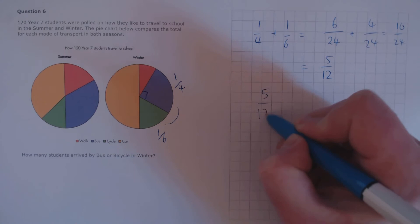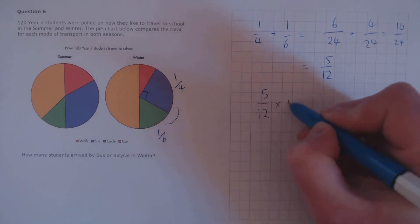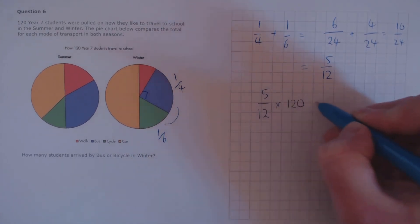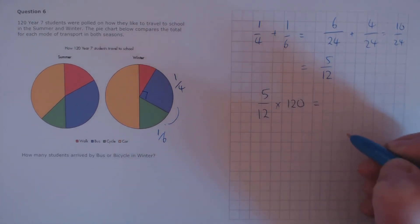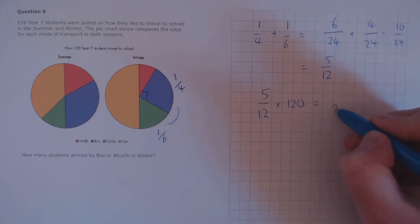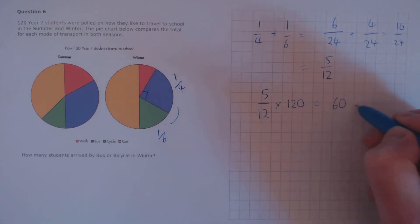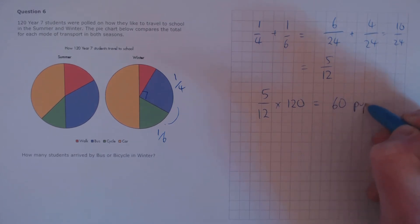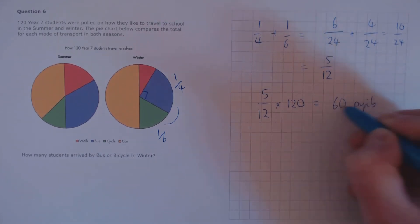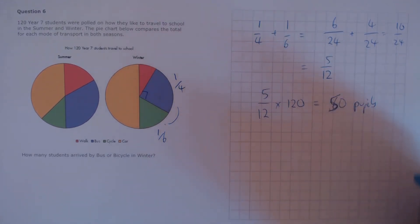Now let's find five-twelfths of the number of students. Five-twelfths of 120 is 50 pupils.